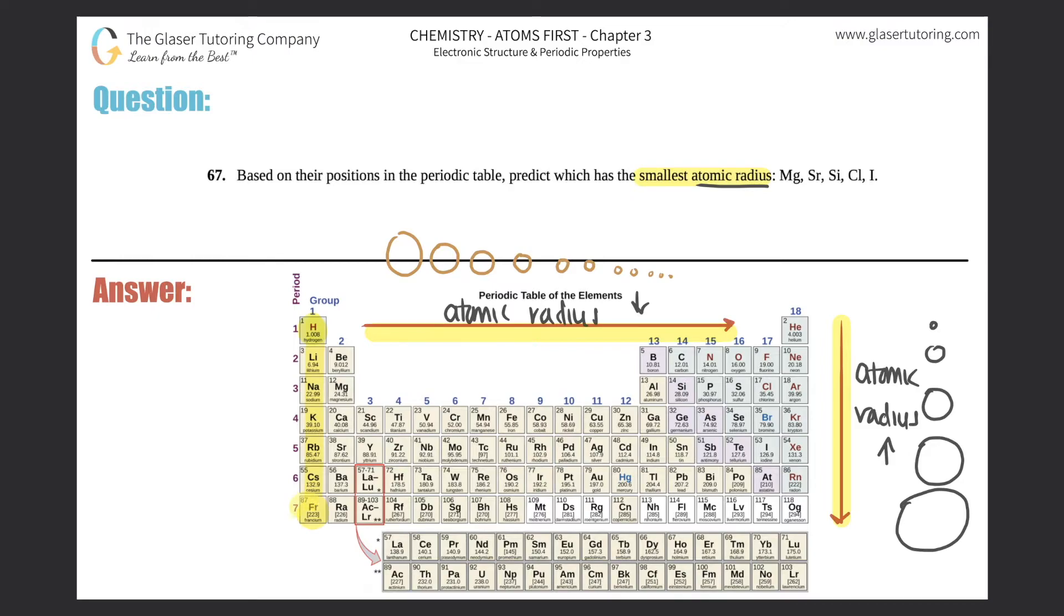For example, from hydrogen all the way down to francium, francium would be much larger than little itty bitty hydrogen. As you go across a period from potassium to krypton, potassium would be very large as opposed to little krypton.